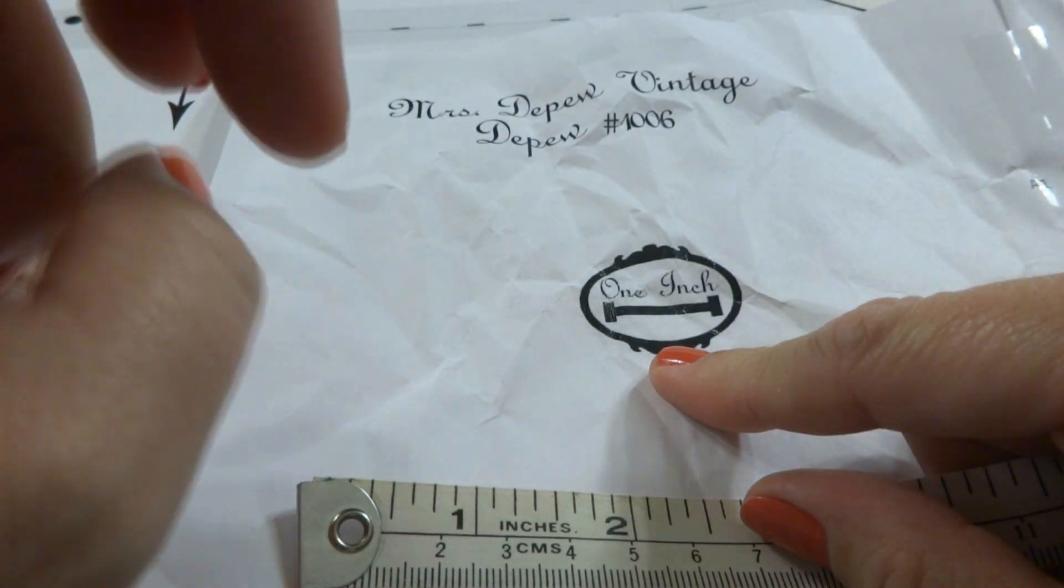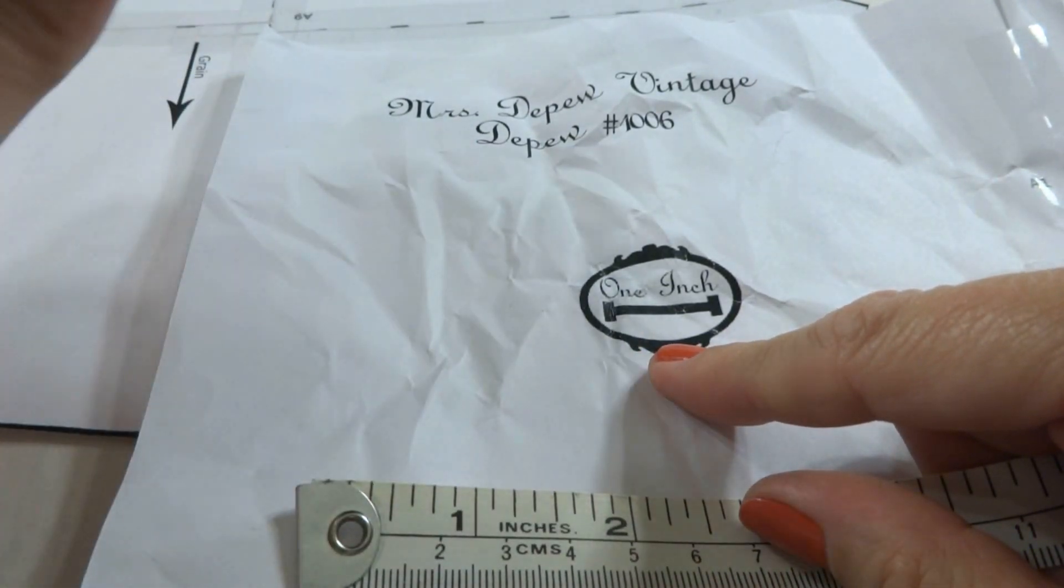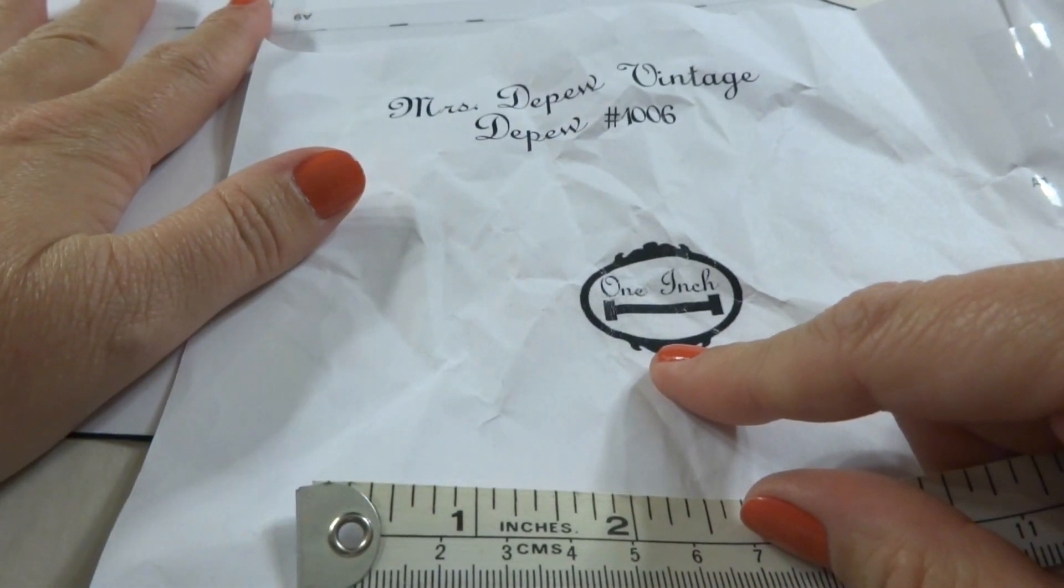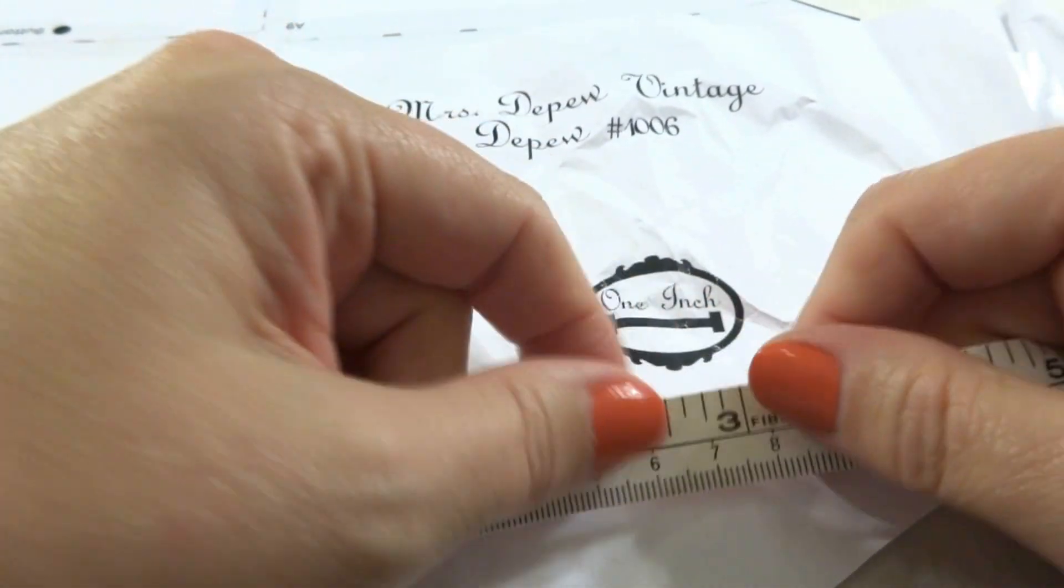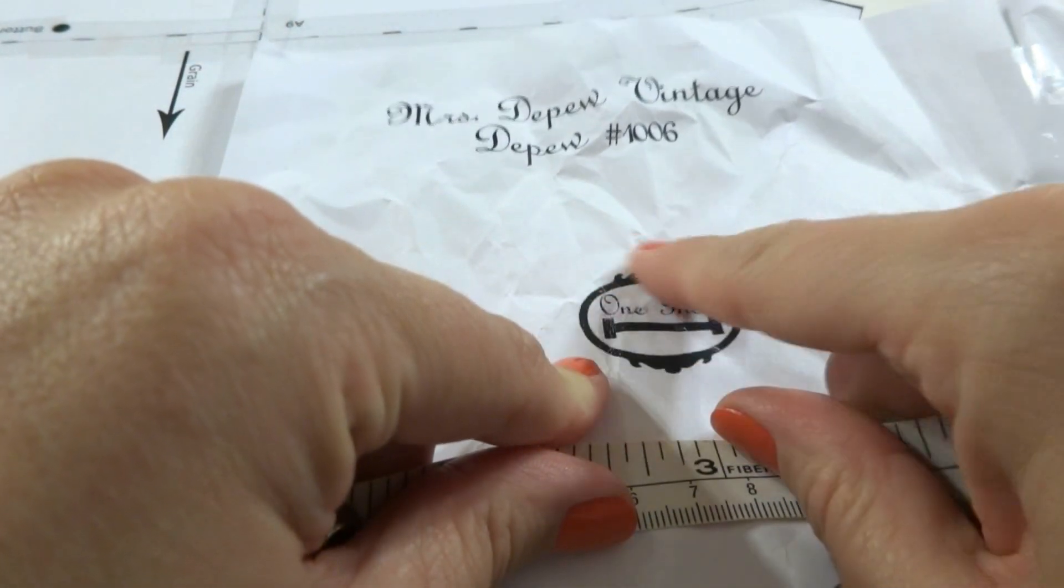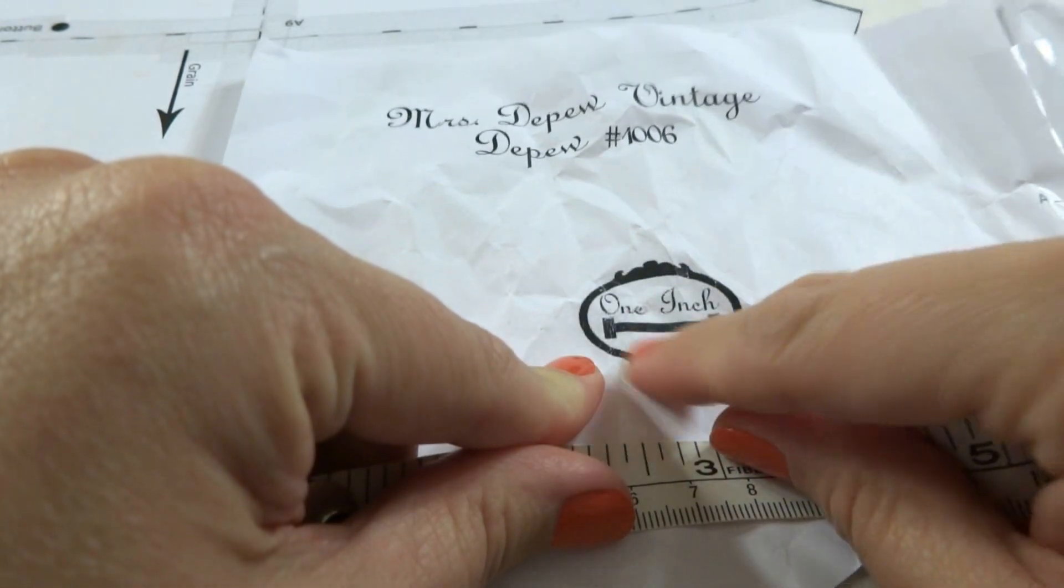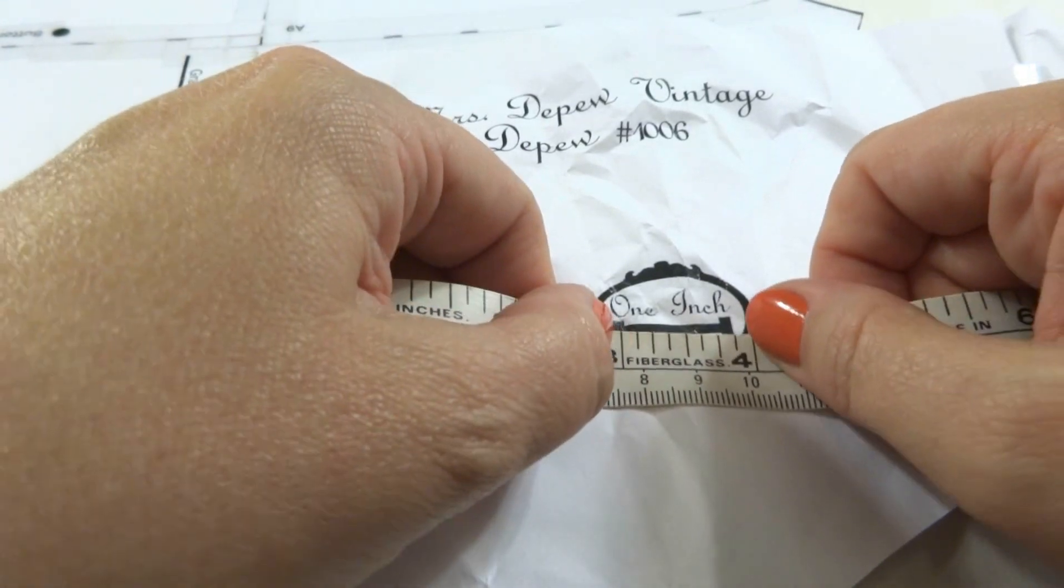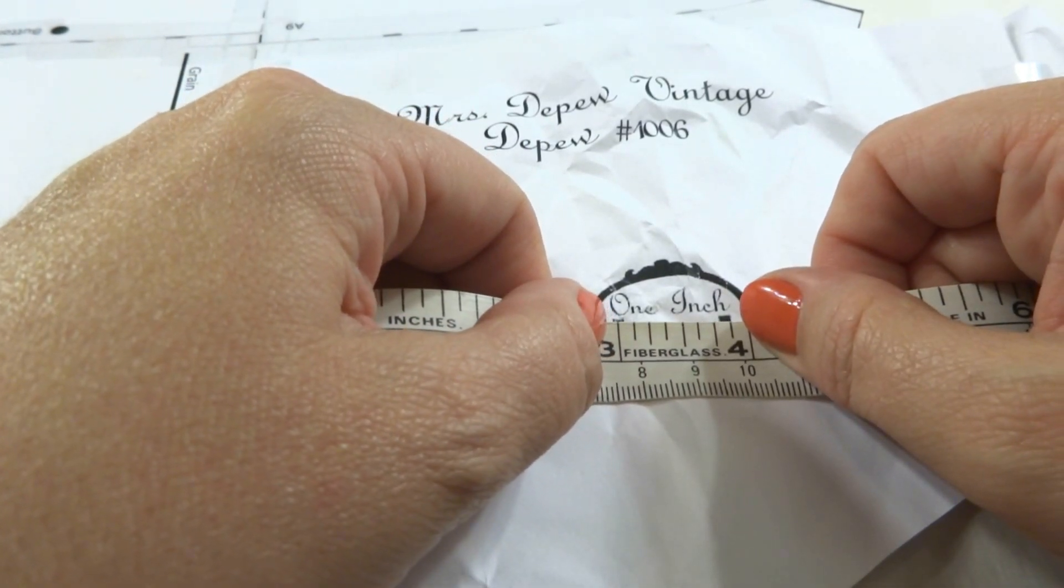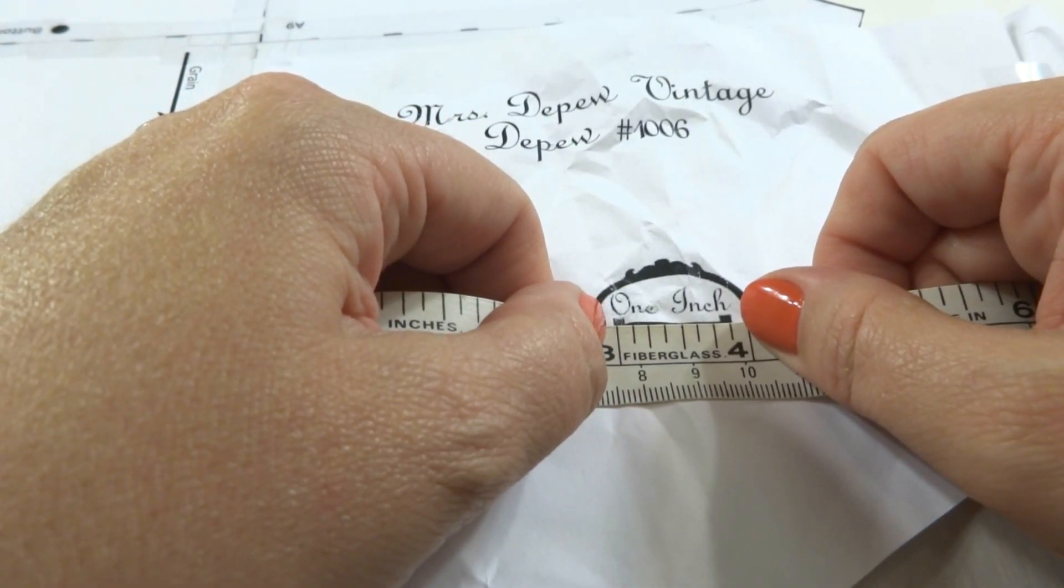Since this is a downloaded pattern, before we start resizing, we want to make sure that the pattern printed out in its proper size. You're going to take your measuring tape and on the pattern there should be a one inch mark so that you can measure to see if it printed properly. Just hold up your measuring tape to it. If you have one inch, you're good to go.